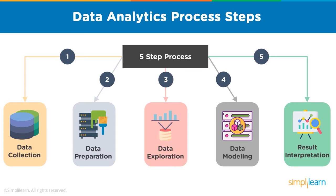Step two is data preparation: formatting collected data into something usable. A common example is processing text using a one-hot encoder, where each word is represented as a binary array. For neural networks, you might convert integers or floats to values between zero and one to avoid bias. Data preparation makes up about 80% of data science work — so whether you're a data analyst or data scientist, you'll spend the majority of your time here.